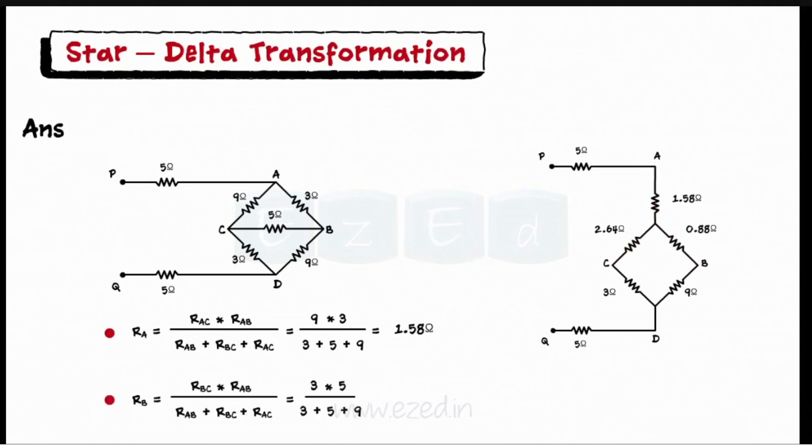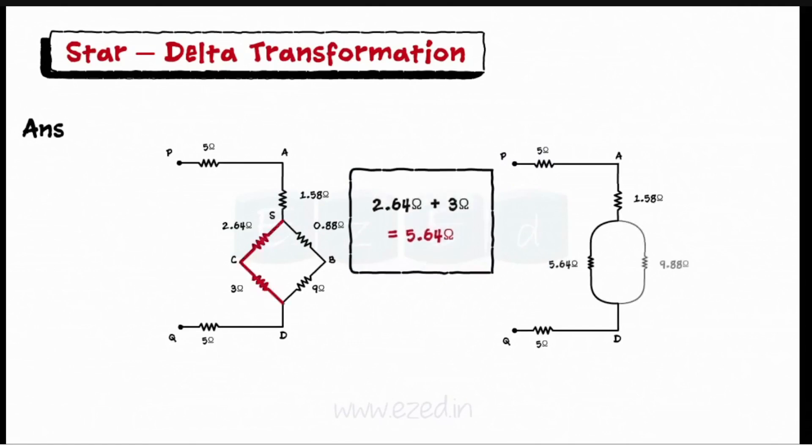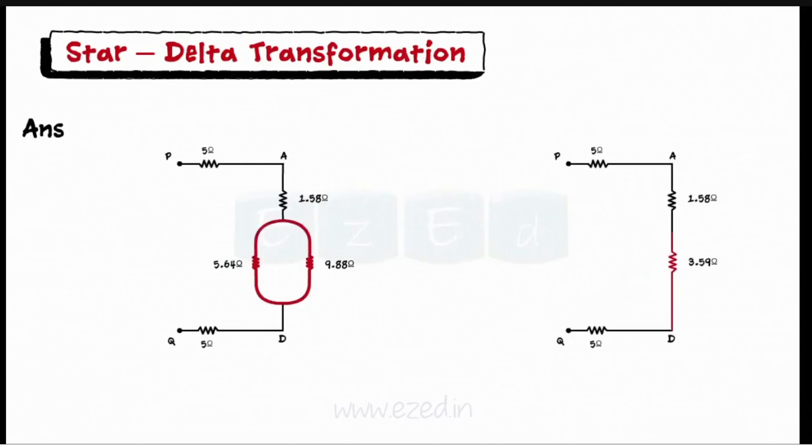RB equals 0.88 ohms and RC equals 2.64 ohms. Now, in the simplified network, there are two series branches. One as SCD and second as SBD. We replace them with equivalent series resistances.